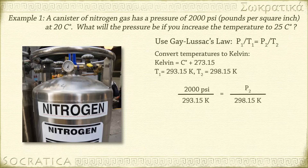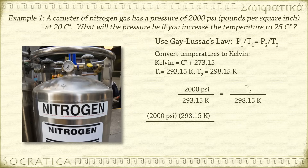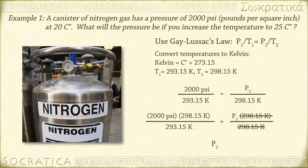Substitute in what we know: 2000 psi over 293.15 Kelvin equals P2 over 298.15 Kelvin. Solve for P2 by multiplying both sides by 298.15. P2 equals 2000 psi times 298.15 Kelvin divided by 293.15 Kelvin. P2 equals 2034 psi.